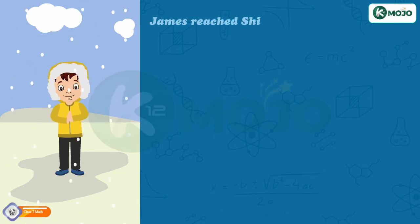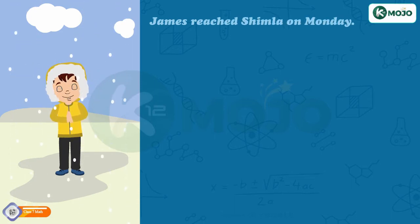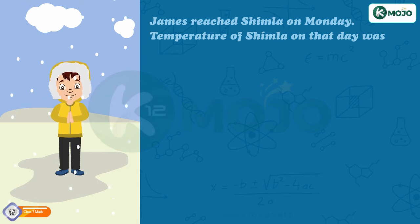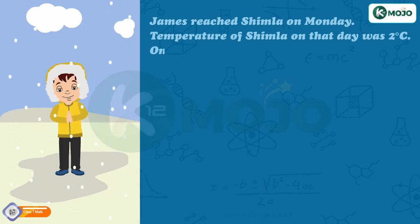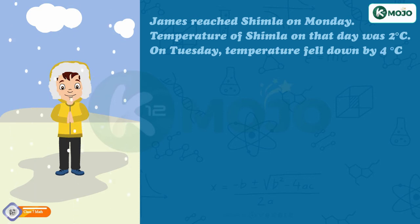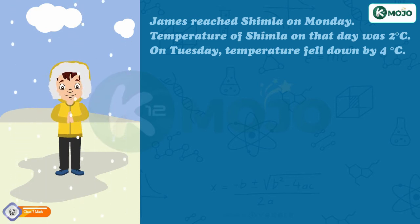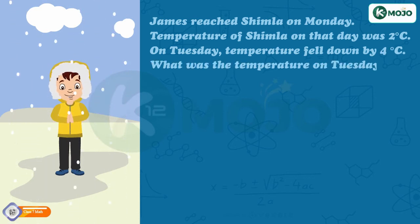James reached Shimla on Monday. The temperature of Shimla on that day was 2 degrees Celsius. On Tuesday, the temperature fell down by 4 degrees Celsius. Can you tell what was the temperature on Tuesday?